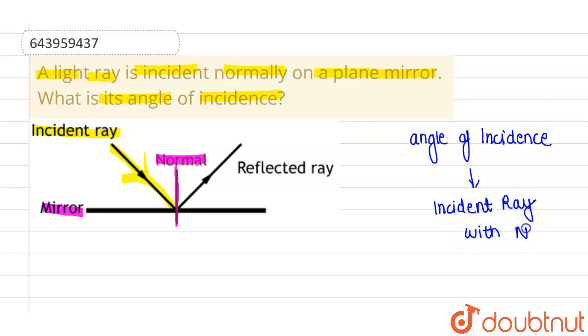So in this particular diagram, this angle, this particular angle theta is the angle of incidence.